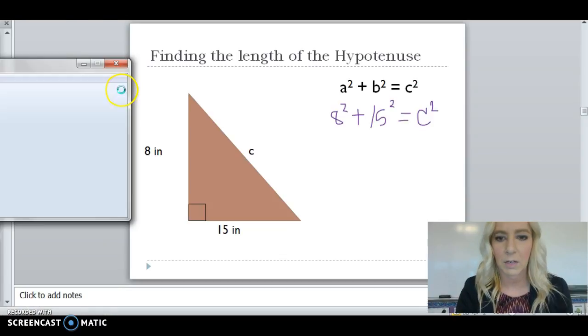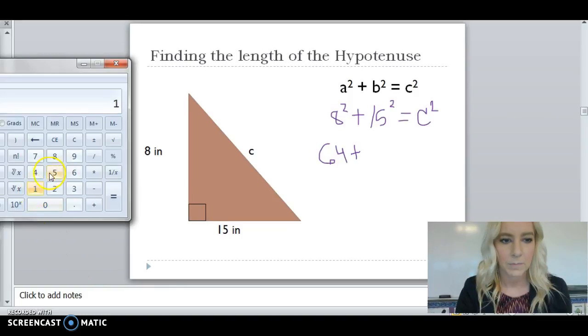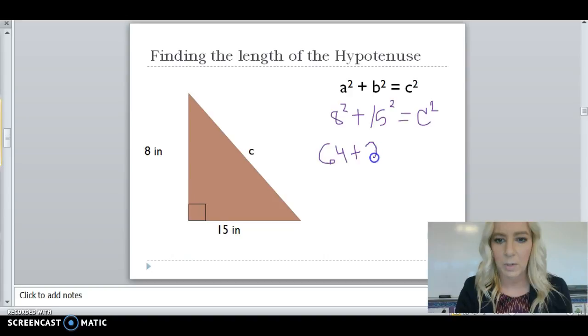And again, you can use your calculator for computation. 8 squared is 64 plus 15 squared, which is 225, which equals C squared.